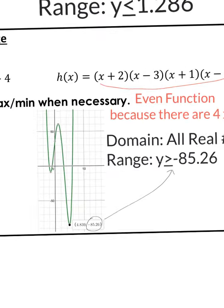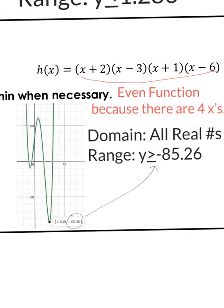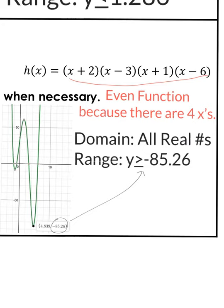And then the last example here. Here's the graph of it. It makes this kind of w looking thing. And then I said it's an even function. You can tell it's an even function because if you were to count your x's there's 4 x's, so that's a degree 4. And also when you graph it you see that the ends are both going up. And so if they're going both up or both down it's got to be even.